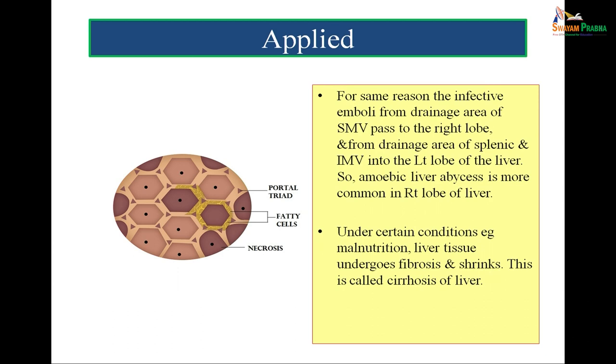Under certain conditions such as malnutrition, liver tissue undergoes fibrosis and shrinks — this condition is referred to as cirrhosis of the liver. We realize that the liver is an important gland with many important metabolic functions, and its compromise needs to be avoided. A knowledge of the clinical conditions associated with the liver can be obtained only if one has a thorough understanding of the anatomical relationships and gross anatomical features of the liver, and then only proper diagnosis and treatment can be done. This is Dr. Gaurav signing off. Hope to see you soon the next time. Thanks, regards, bye and namaste.